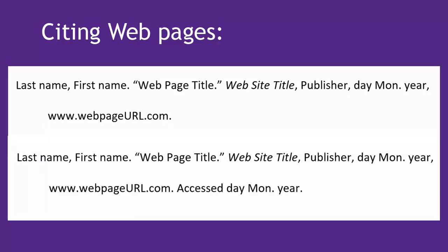If you're using the URL for a page that can be easily edited, such as a blog or social media, or if there's no date of last update so you don't really know how often it's updated, it's recommended to add the access day, month, year after the URL.